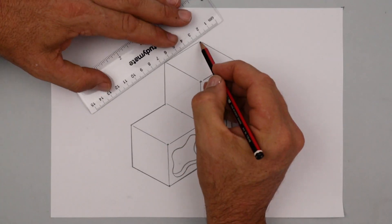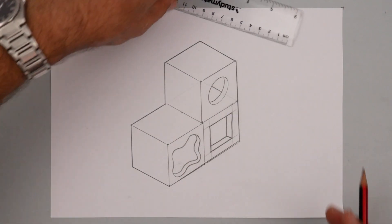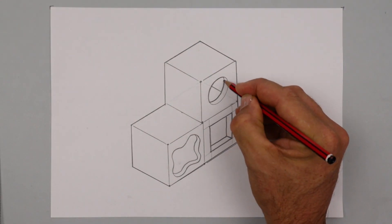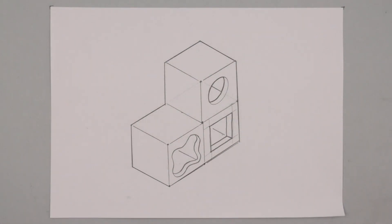To tidy this drawing up, you could use a ruler and go right around the outside. Call that a cutting line. Do you think you could stack more cubes than I have or do you think you could put them in a different direction?